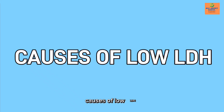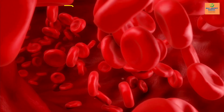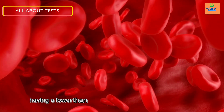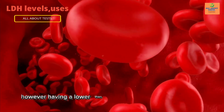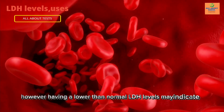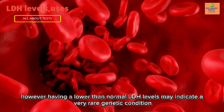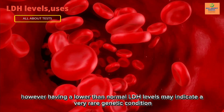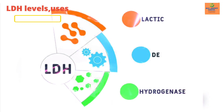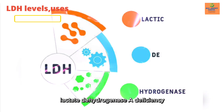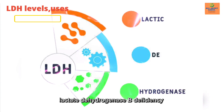Causes of low LDH. Having a lower than normal LDH level is uncommon; however, having a lower than normal LDH level may indicate a very rare genetic condition. There are two types of this condition: Lactate dehydrogenase A deficiency and Lactate dehydrogenase B deficiency.